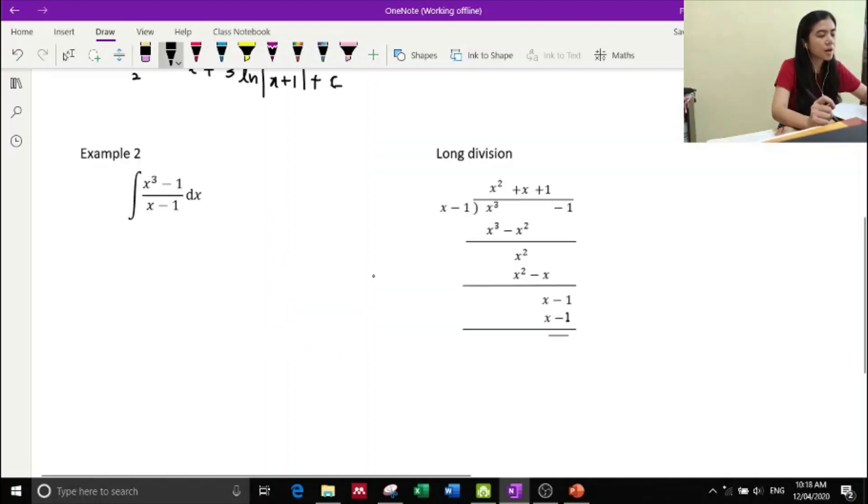Okay, for the second example, we have the integration of x squared minus one over x minus one. So from the long division, we can see that we have no remainder for the answer of the division.